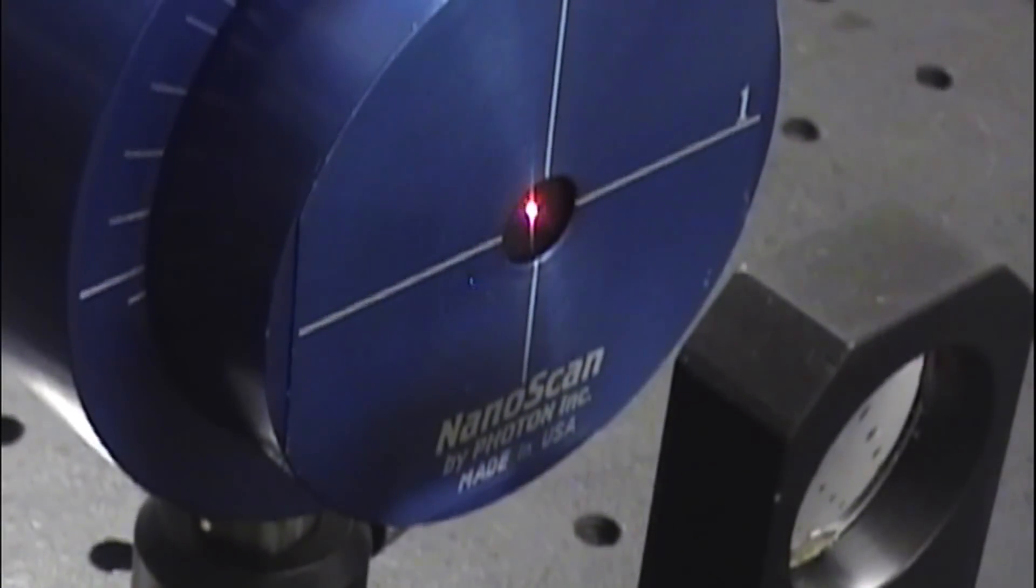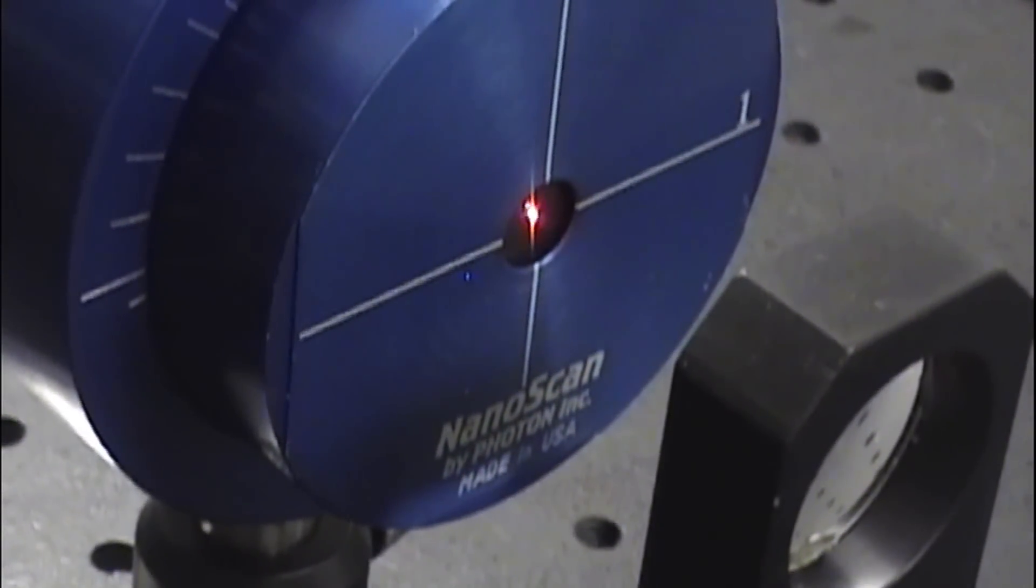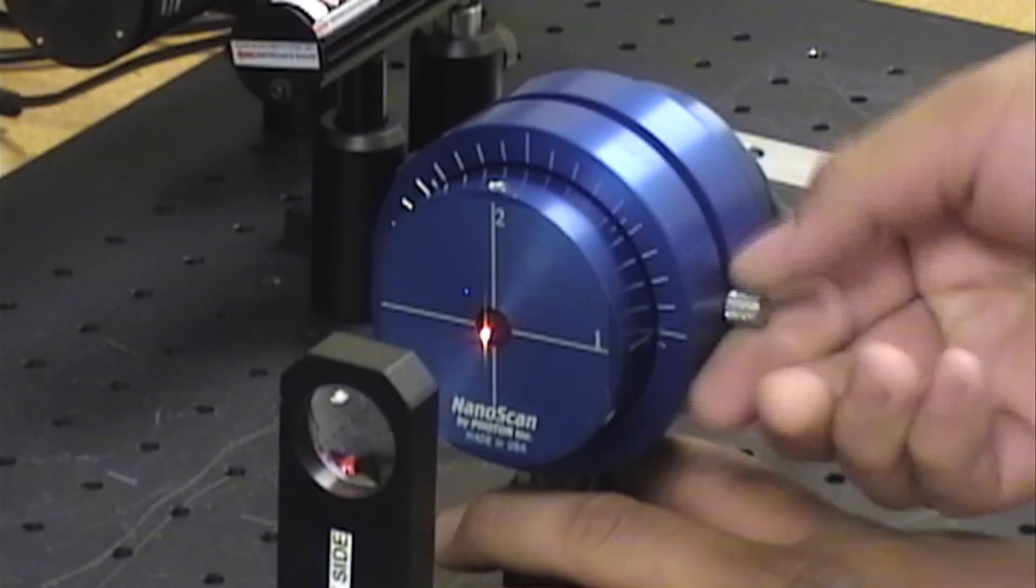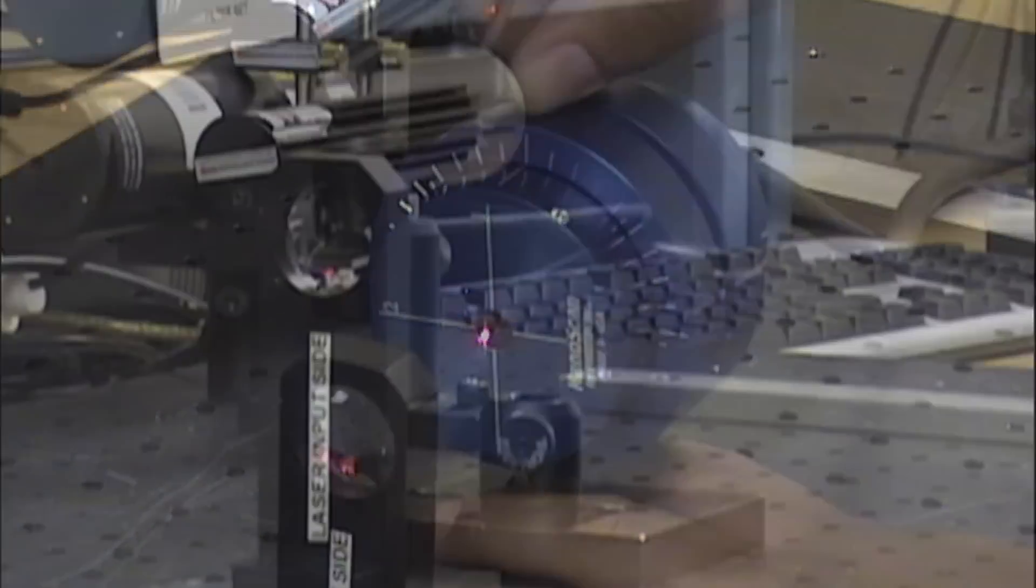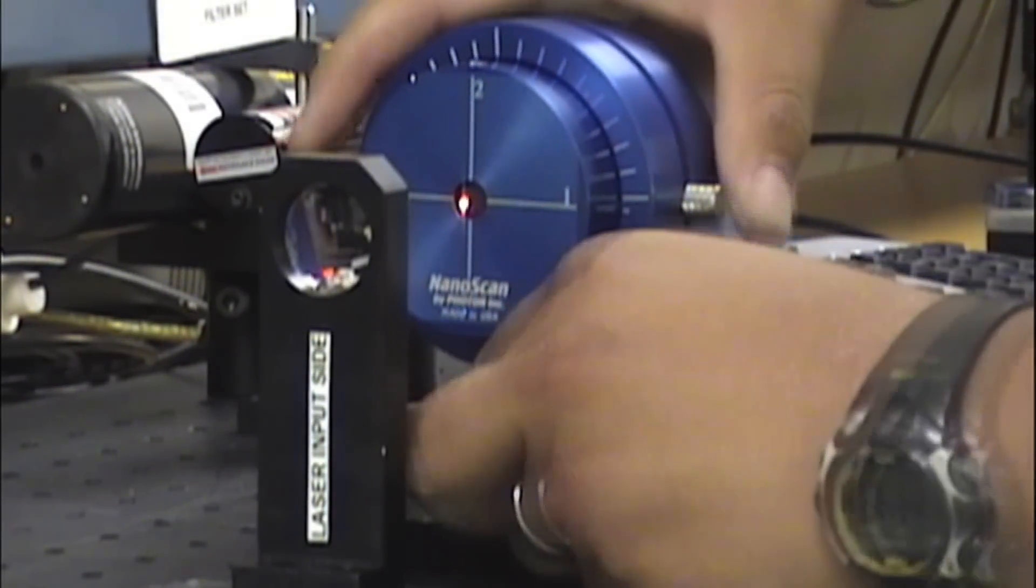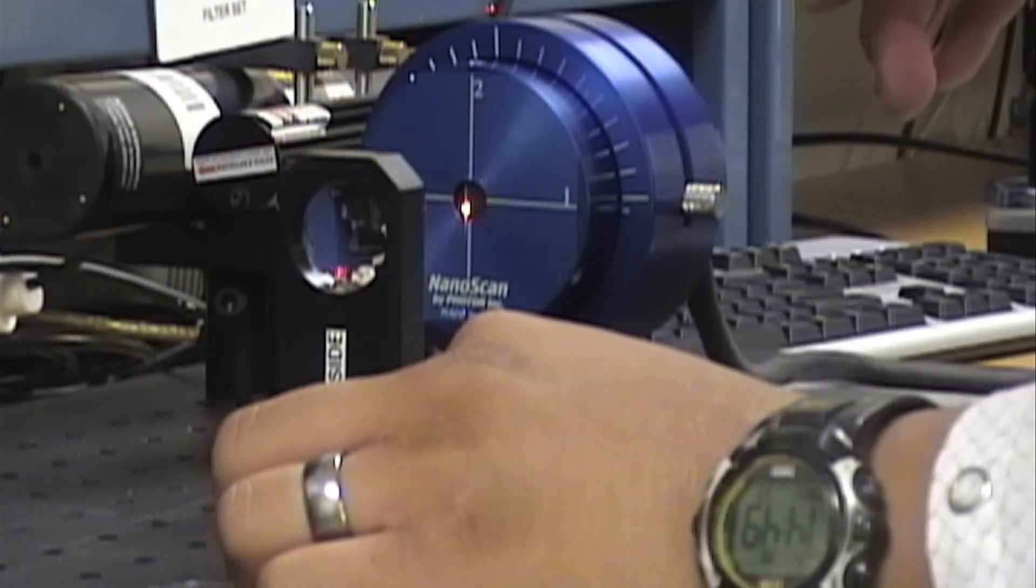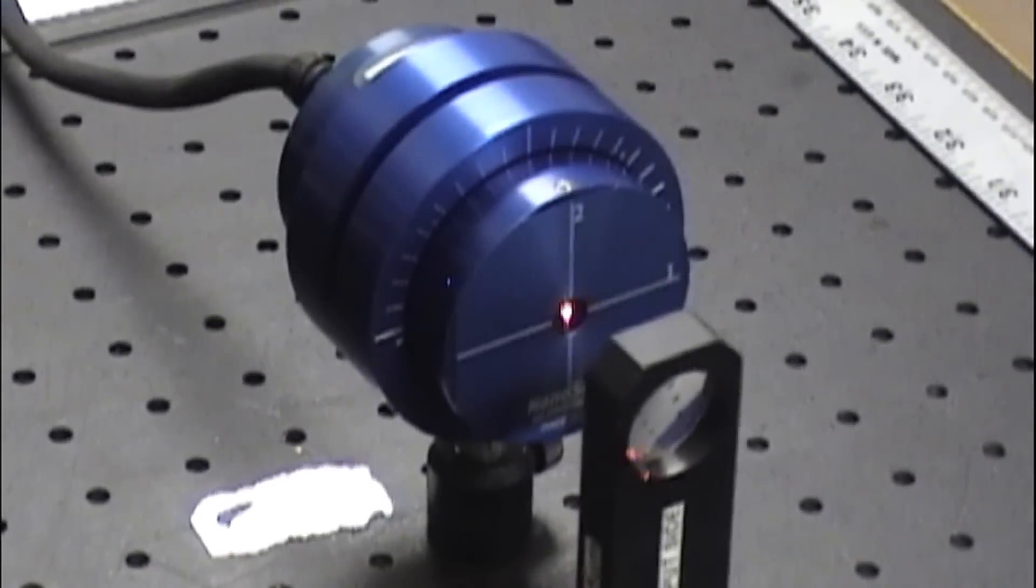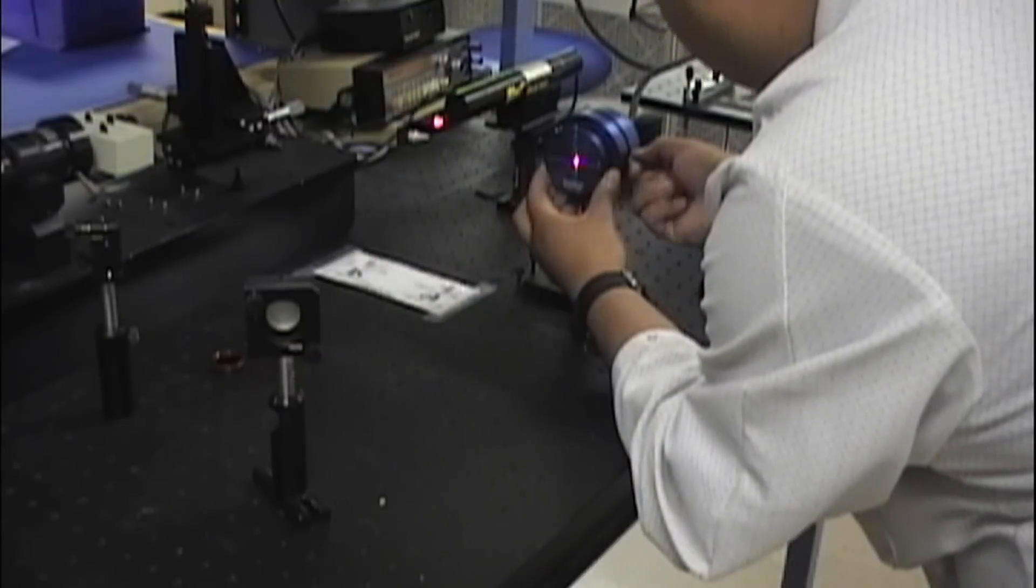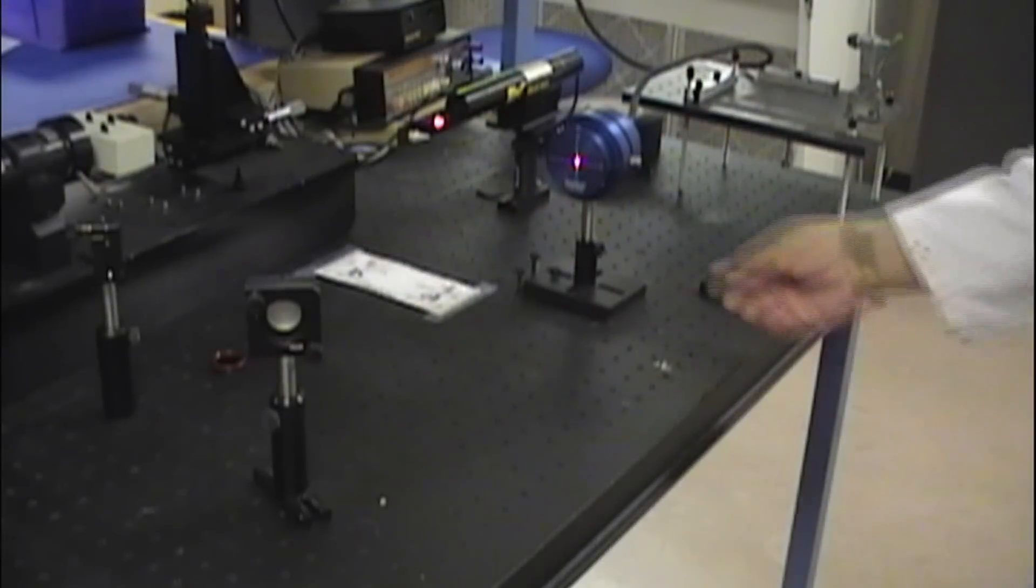When used with a proper laser optical setup, photon nanoscan profilers can be used for many years without repairs. If you have any reason to believe that a profiler is no longer performing within the original specifications, we recommend that you send it in for repair or recalibration by our trained technicians to bring the unit back to the proper NIST traceable standards.